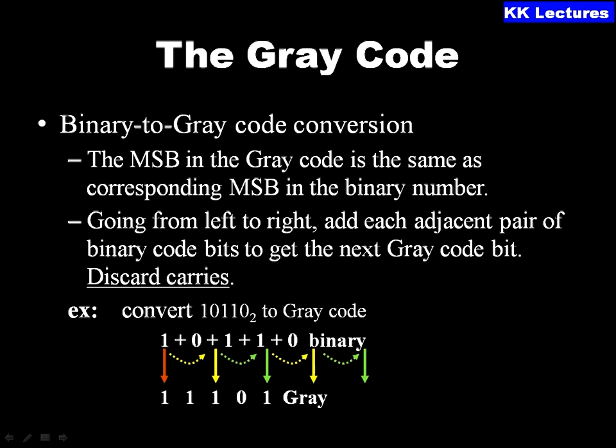To convert a binary number to Gray code, follow these steps: the MSB in the Gray code is the same as the corresponding MSB in the binary number. Then, going from left to right, add each adjacent pair of binary bits to get the next Gray code bit, discarding the carry. For example, converting 10110 to Gray code: write the MSB as-is (1), then 1+0=1, 0+1=1, 1+1=0 (carry discarded), and 1+0=1, giving a five-bit Gray code.